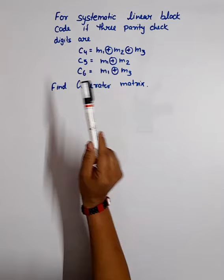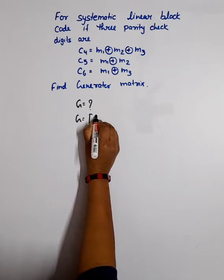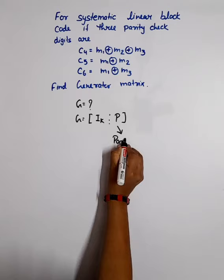We know G is a combination of identity matrix and parity matrix, where the identity matrix K is the length of message bits.